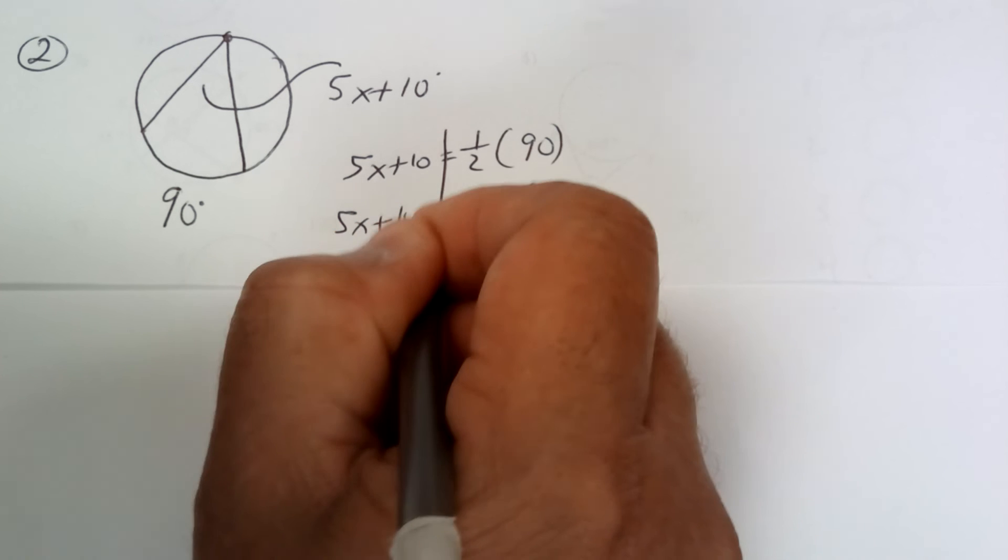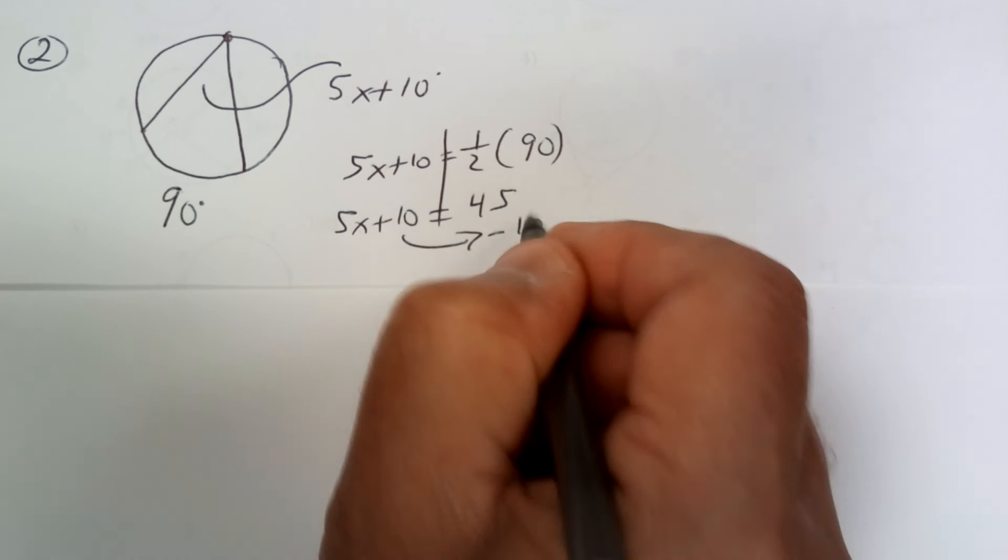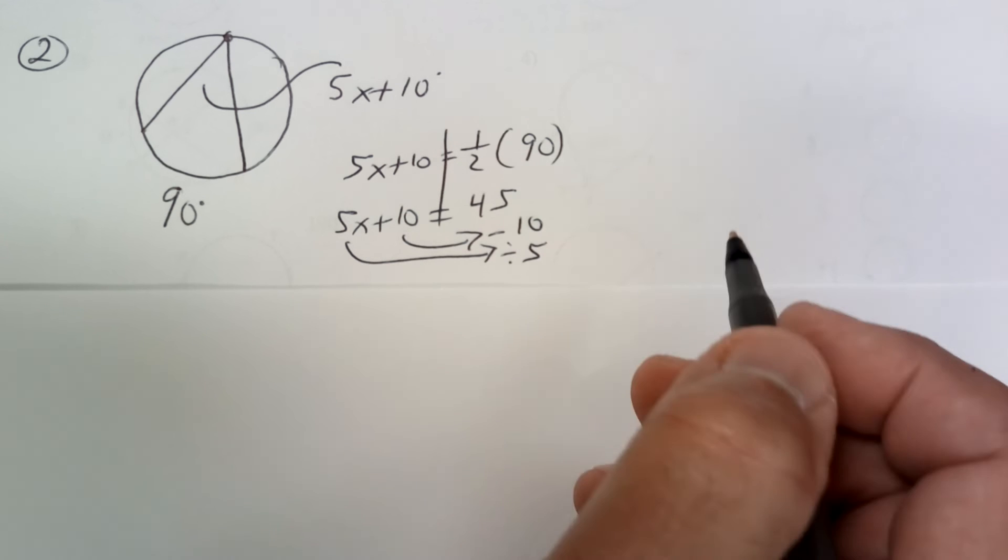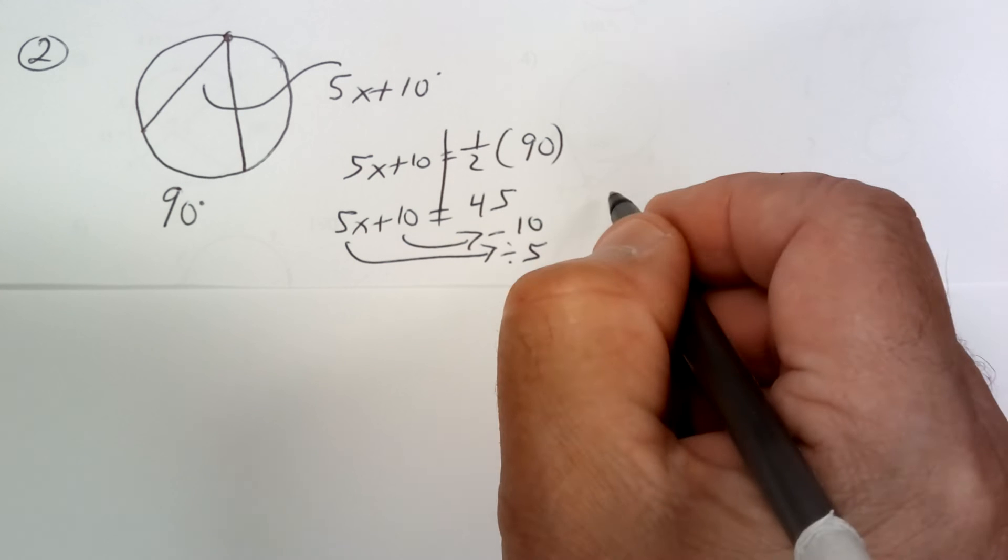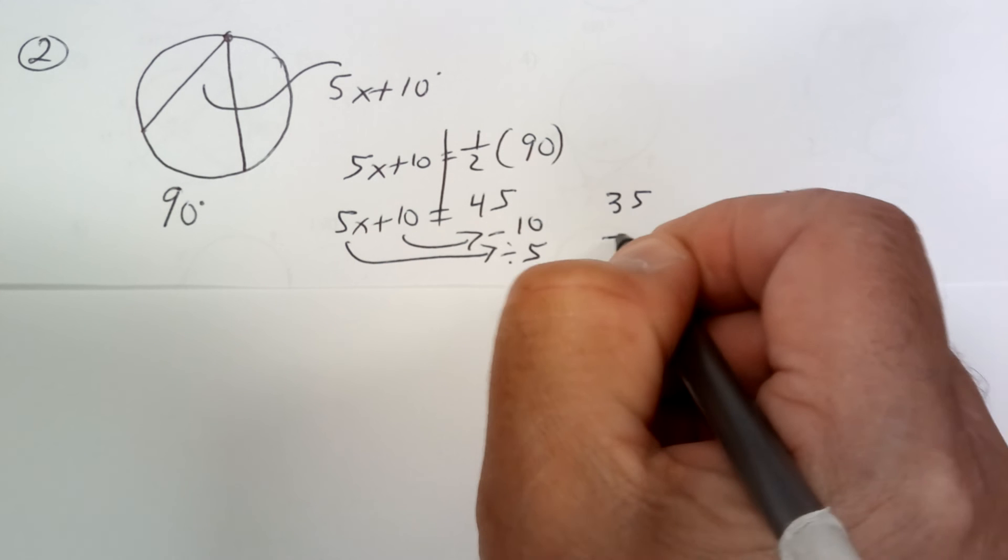So now you're going to subtract 10 and divide by 5. So when you subtract 10, you get 35. And when you divide by 5, you get 7.